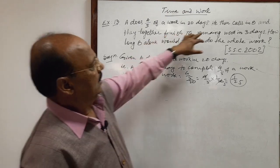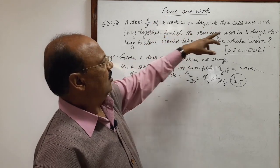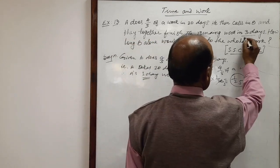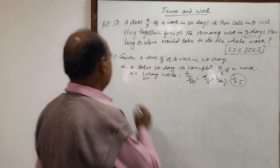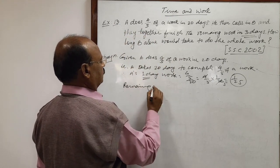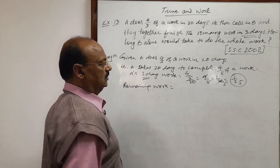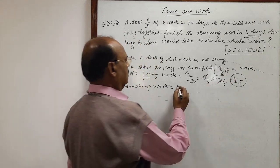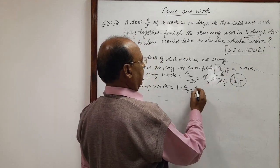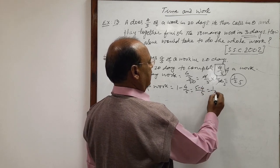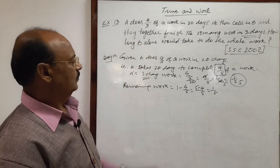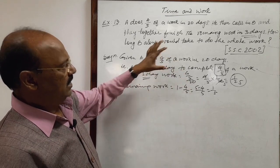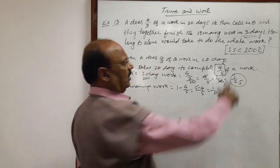Now, he means A then calls in B and they together finish the remaining work in 3 days. Now let us see what is the remaining work? This much work has been already done in 20 days. So remaining work is 1 minus 4 by 5, that is 5 minus 4 by 5, that is 1 by 5. One fifth of the work is remaining work and this 1 by 5 of the work is done by A and B working together in 3 days.